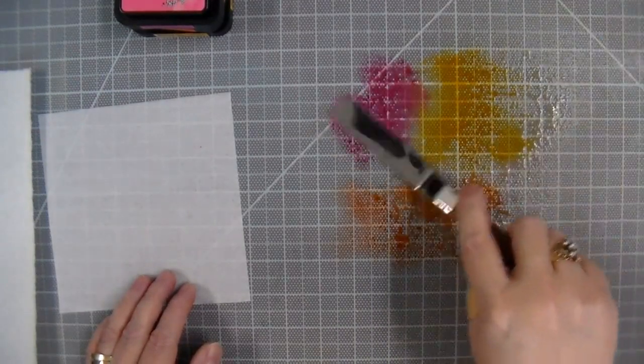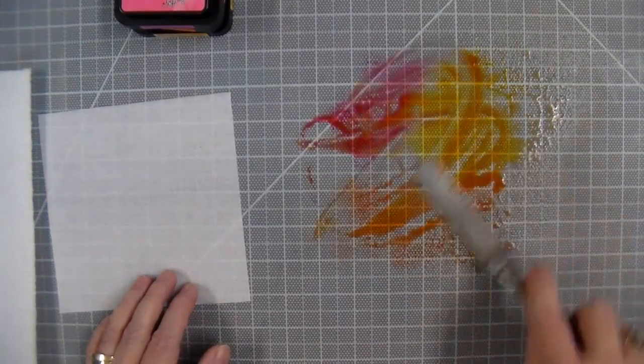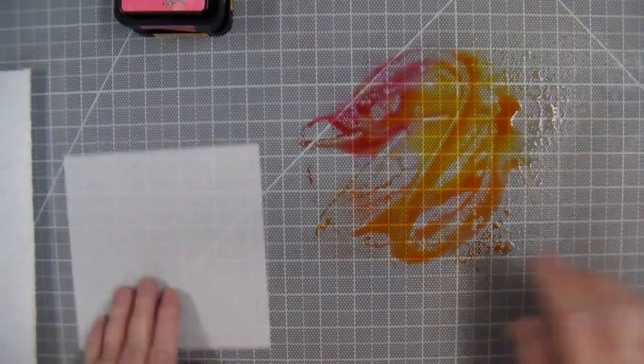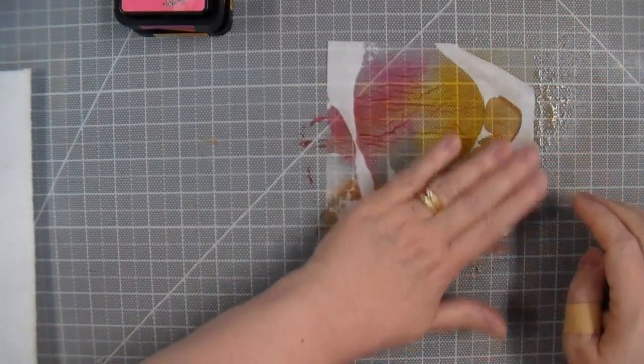And now I'm going to use my palette knife just to mix the colors a bit, so I don't have blocks of color. And then I'm going to drop the tissue paper in, and you'll see it absorbs the ink right away.